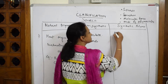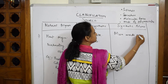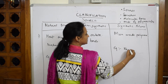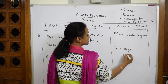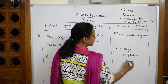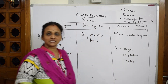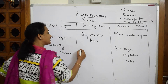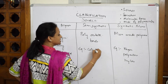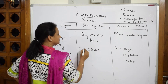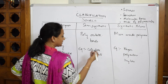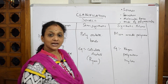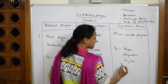Synthetic polymers are man-made polymers. Examples include rayon, polyester, and nylon — all man-made. We also have Buna N and Buna S. The example for semi-synthetic would be cellulose acetate, also called rayon.